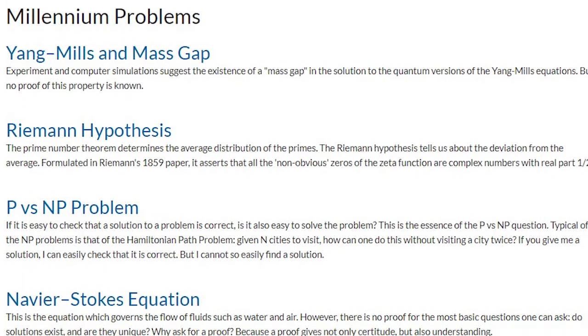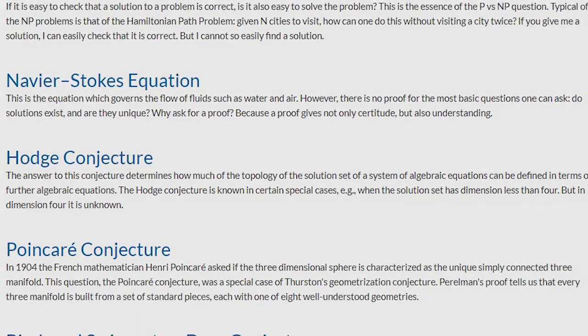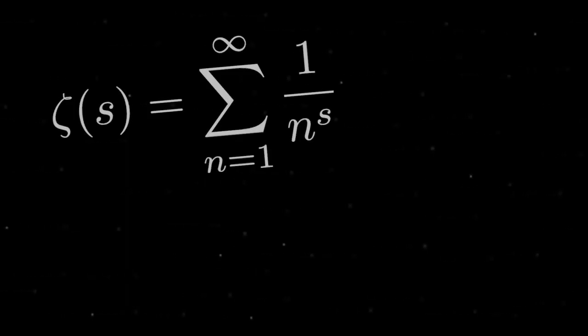If you've ever seen the Millennium Prize problems, then you may have seen the Riemann hypothesis and its immense link to the study of prime numbers. Or perhaps you've seen the zeta function in other contexts, such as the probability for s numbers to be co-prime.